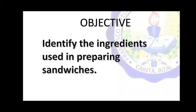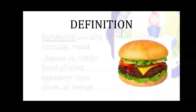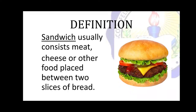At the end of this video lesson, you are expected to identify the ingredients used in preparing sandwiches. Let us define what a sandwich is. A sandwich usually consists of meat, cheese, and other food placed between two slices of bread. As you can see in the picture, there are two slices of bread and in the middle there are vegetables, cheese, and meat. That is the basic definition of a sandwich.